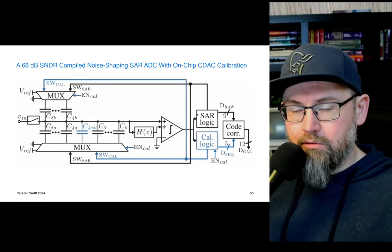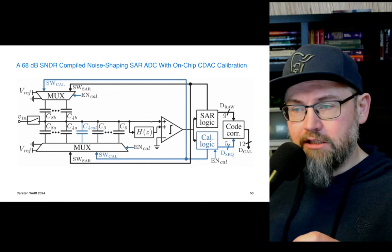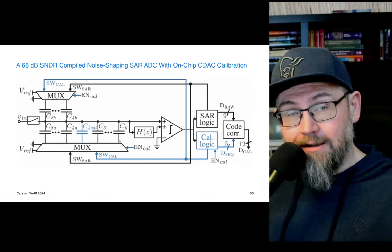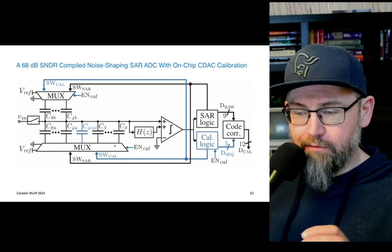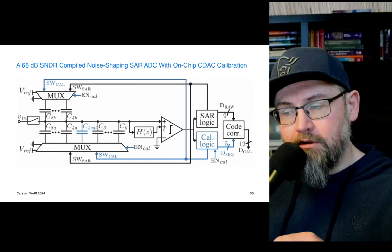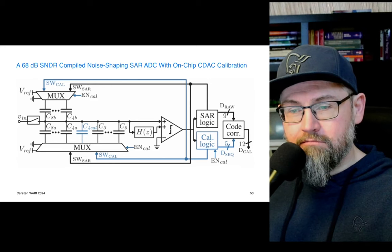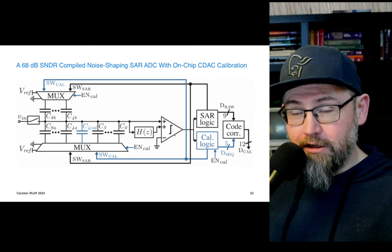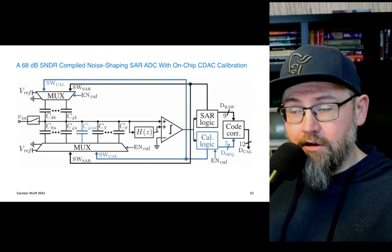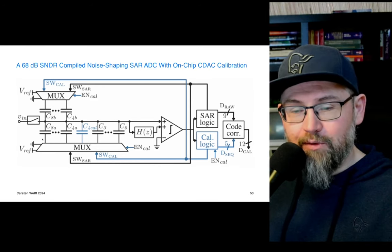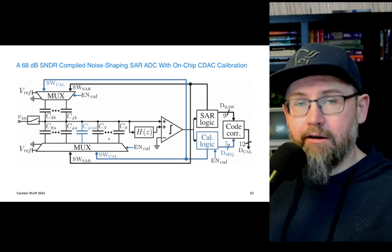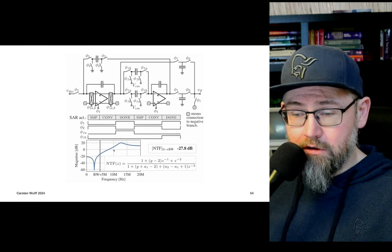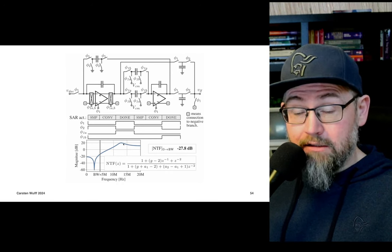A few years ago, a student worked on sigma delta modulators combining a successive approximation ADC with a sigma delta modulator. In a SAR ADC, the voltage on the capacitor at the end of bit cycling is actually the quantization error (assuming perfect linearity), so you can feed that analog signal into a loop filter and use it in the next bit-cycling cycle. Additionally, the sigma delta modulator's high resolution was used to calibrate the size difference between the largest and smallest capacitors — a main source of non-linearity in SAR ADCs. The loop filter uses a switch-cap topology with complex conjugate zeros in the noise transfer function and chopping of the input to handle offset.